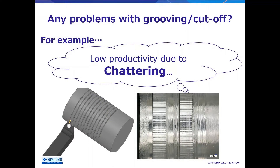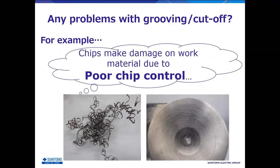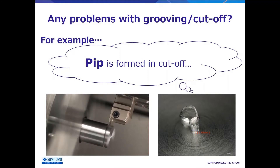Do you have any problems with grooving and cutoff? For example, because of chattering, machining can only be done at low efficiency. Chips hit the machined wall and parts are scratched. PIP is formed in cutoff. Various problems might happen in grooving and cutoff operations.